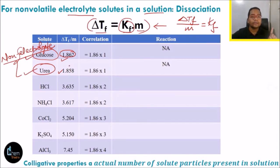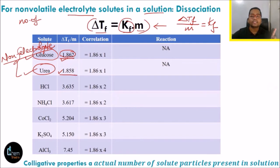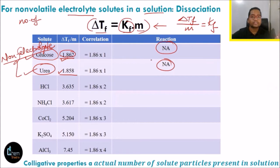These values are the same because colligative property depends on the number of particles. If you take 1 molal glucose and 1 molal urea, the number of particles will remain the same in both. So the values 1.862 and 1.85 are almost similar. There is no problem here because this is a non-electrolyte solute, so no dissociation or association is occurring.